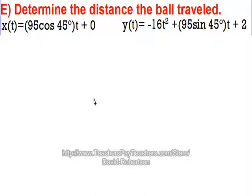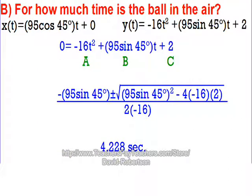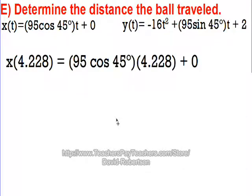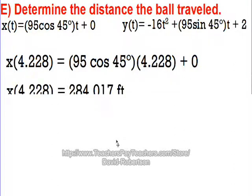Next we're going to find the distance that the ball traveled. Now this is the horizontal distance, not the total distance. So we're looking for how far across the field does the ball travel. In order to do this, we're going to plug in that 4.228 that we had previously, way back here, when we answered how much time the ball is in the air. So I want to find out, since the ball is in the air at 4.228 seconds, so right now at 4.228 seconds the ball will be on the ground. So if it is on the ground, how far across has it gone? So in order to do that, I'm going to plug in the 4.228 in the x equation for t. And when I do that on the calculator, I get 284.017 feet.